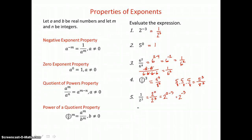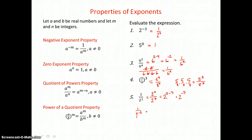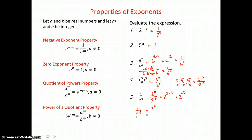It works both ways. If I have 7 to the negative 2 power in the denominator, I can move it to the numerator and make that exponent positive. So I end up with 7 squared as a result.